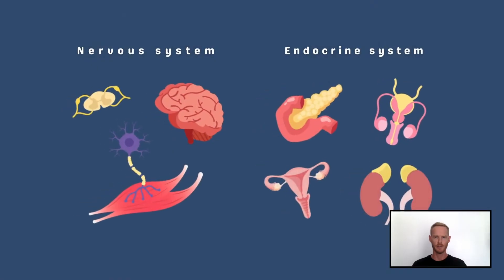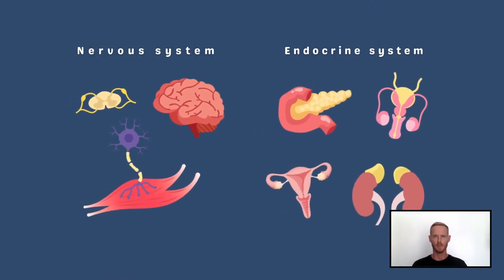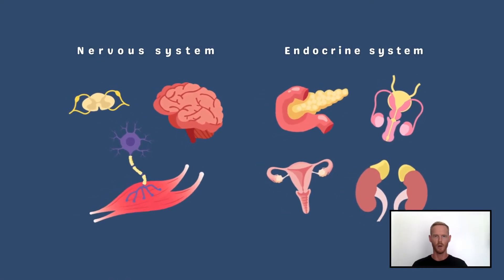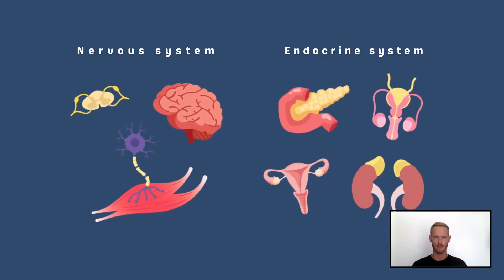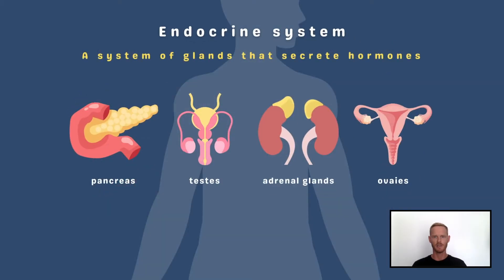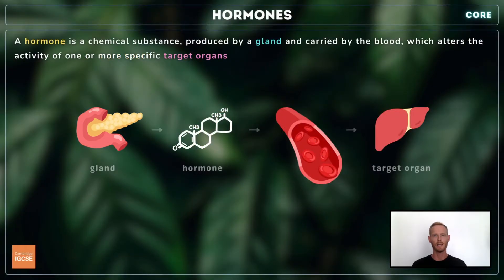There are two communication systems in the body: the nervous system, which we covered in topic 14.1, and the endocrine system. The endocrine system consists of a network of glands, called endocrine glands, distributed throughout the body. Endocrine glands secrete chemical substances called hormones, which pass into the blood and are carried throughout the body by the bloodstream. This allows hormones to come into contact with a wide range of cells, some of which have receptors on their outer membranes.